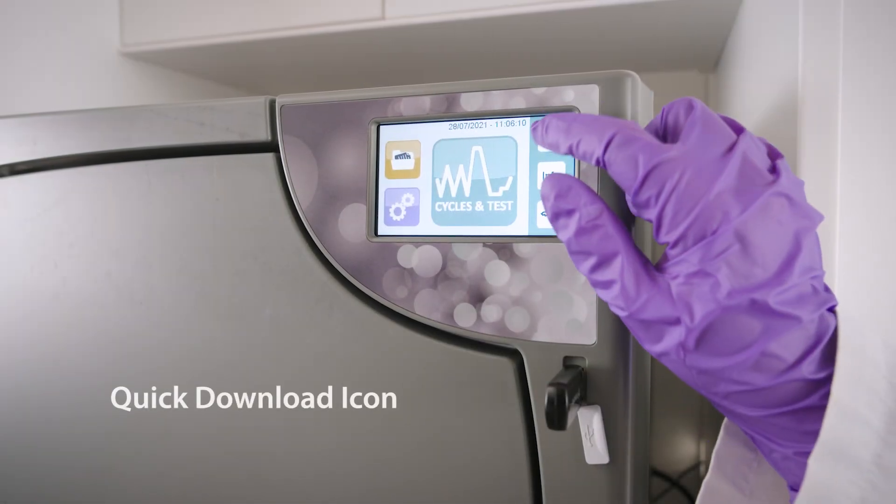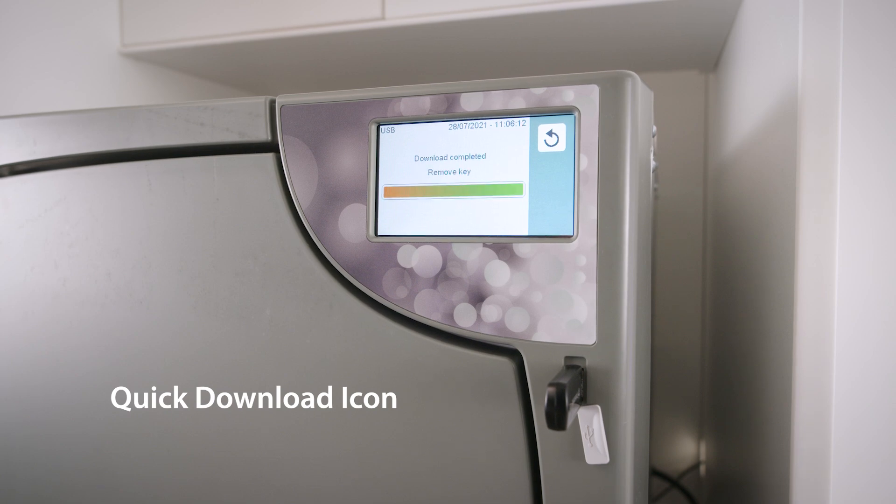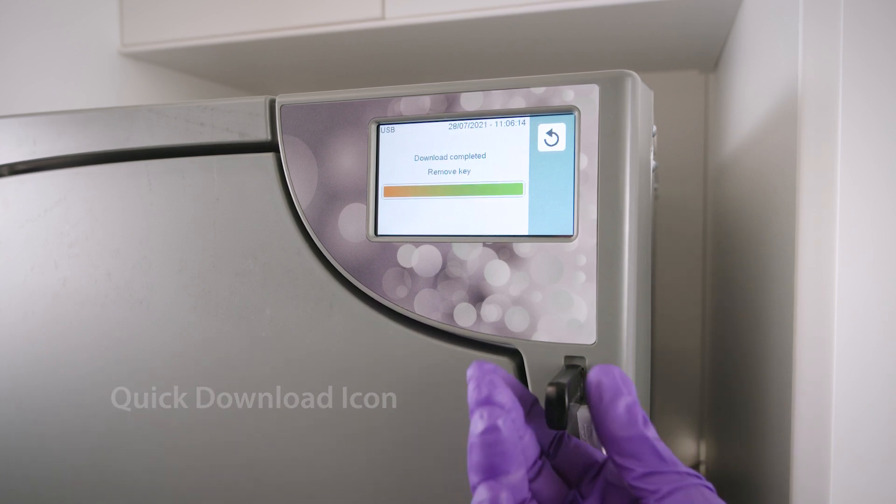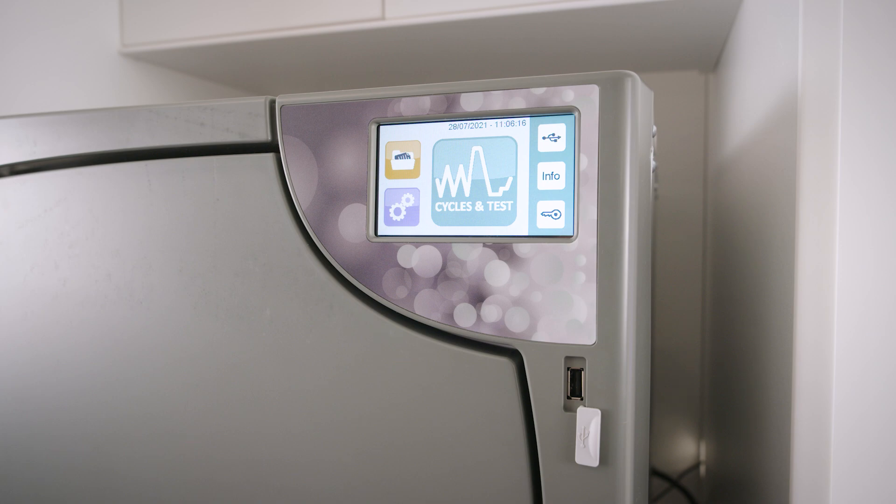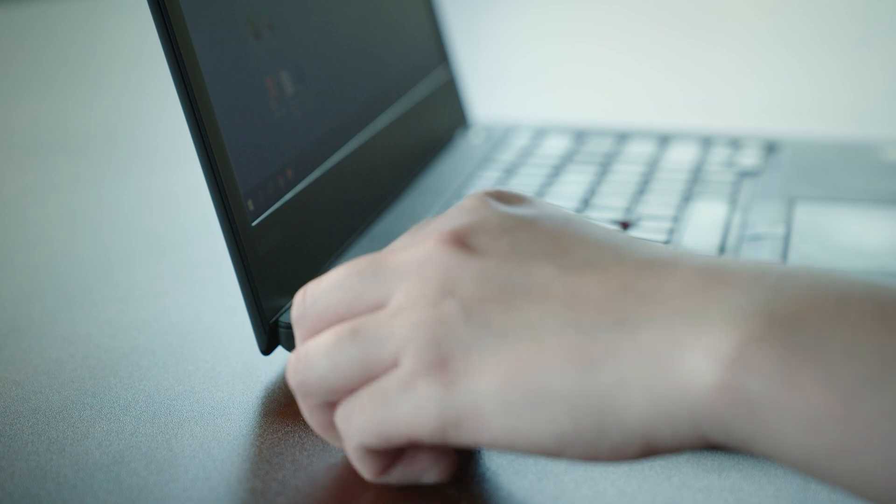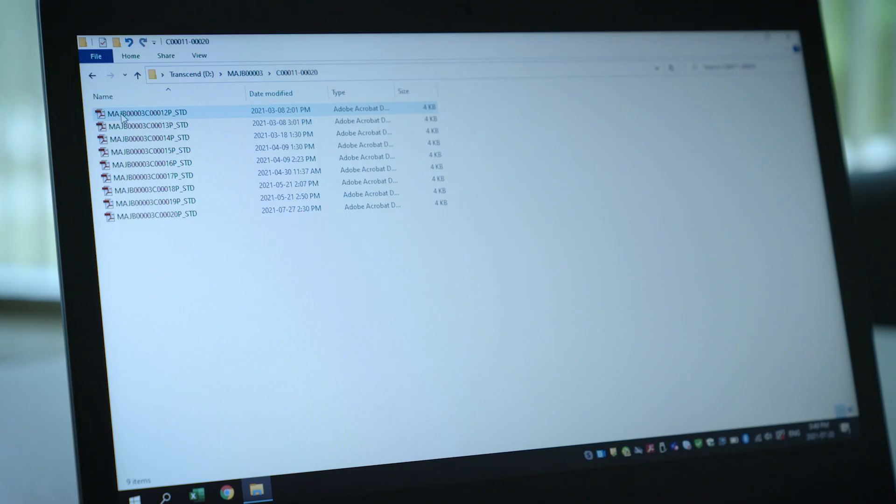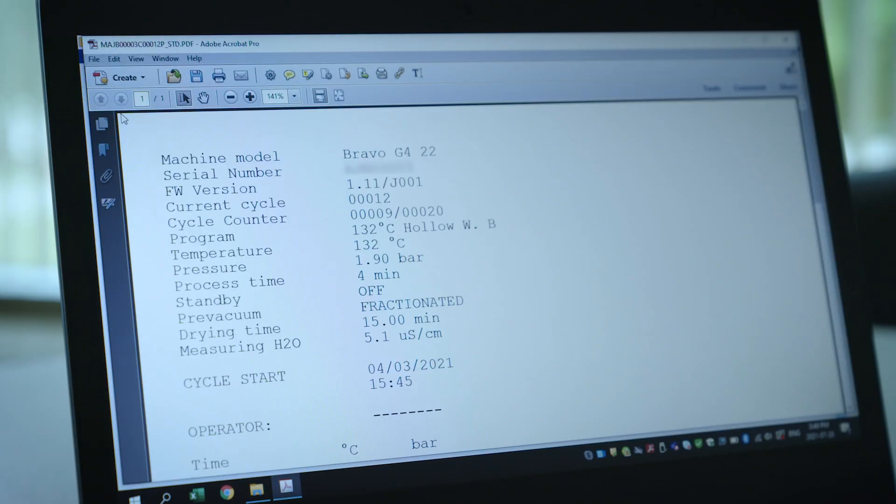The Quick Download icon is used to download the most recently unsaved cycles directly onto the USB key provided with the unit. This feature takes the guesswork out of data logging, ensuring that only the latest cycles that have not yet been transferred will be saved onto the USB key.